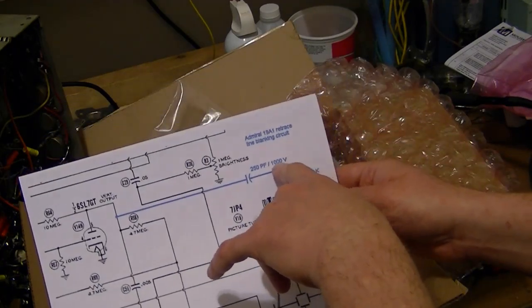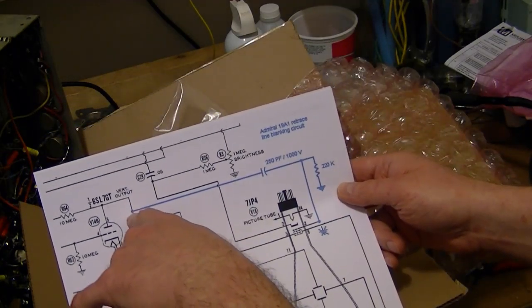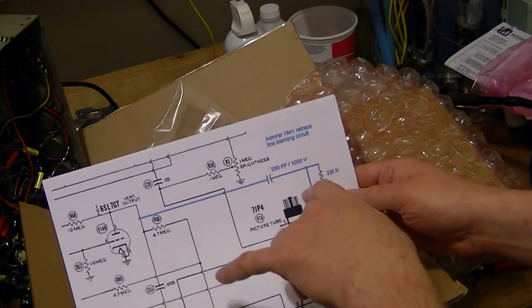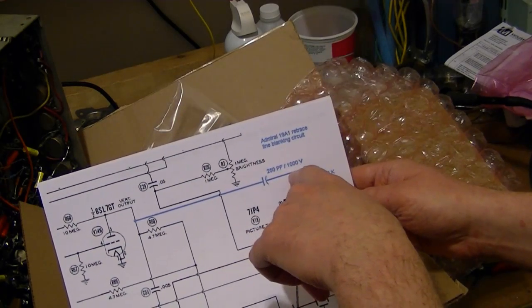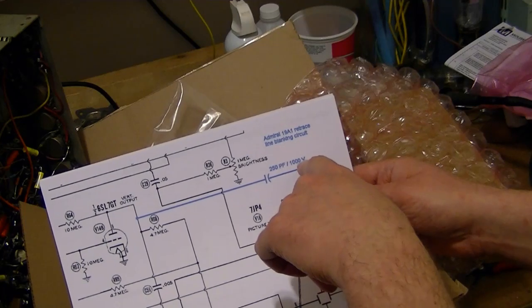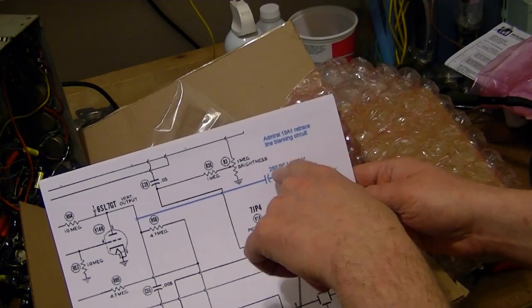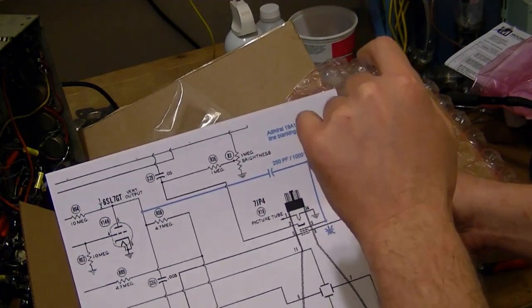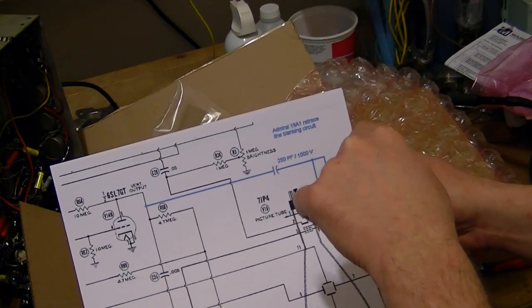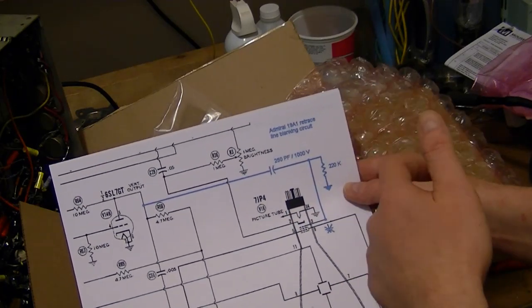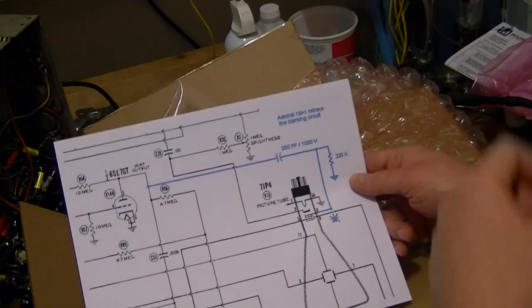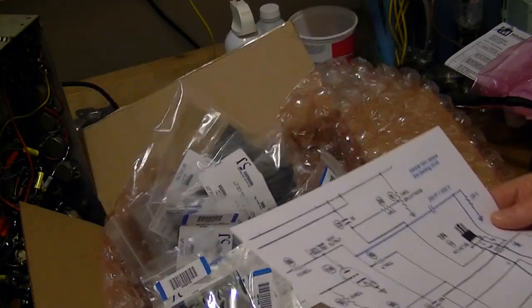Need a high voltage cap here, because this is a pretty significant voltage here. I don't know if I've got 250 at 1,000, but I'm pretty sure I've got 500 picofarad at 500 volt. If I put two of those in series, the capacitance gets halved, while the voltage rating gets doubled. So I should be able to work that out.